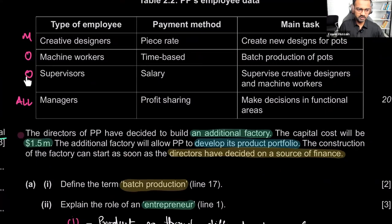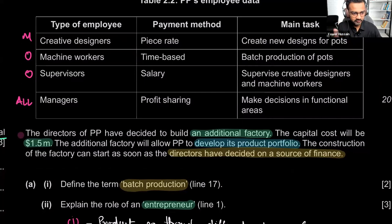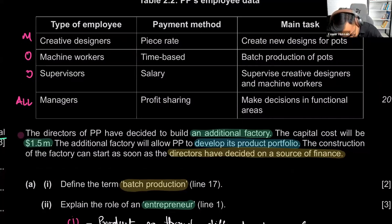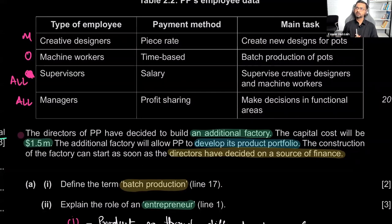Third type: supervisors. They are paid through salary, and their main task is to supervise creative designers and machine workers — so they'd be in both departments. Do you think salaries are okay for supervisors? Will it motivate them to keep a good eye on people? The problem with salary is that when you know you're getting paid no matter what, you're not going to actively look for problems in the workers' jobs — you'll just take your salary and go.